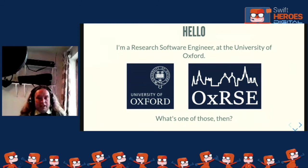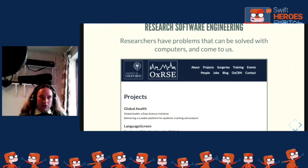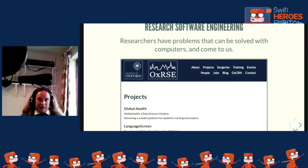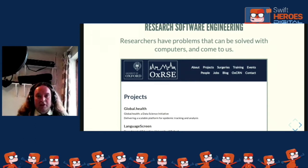My job title is Research Software Engineer - it has 'software engineer' in it, but what does 'research' make specific? The team I'm on is in the computer science department at Oxford University, but we collaborate with people across the entire university. Just recently I've been working on a project called global.health, which is a data science platform related to COVID-19 and the data being generated through trying to manage, control, and ultimately solve the problems introduced by COVID-19.